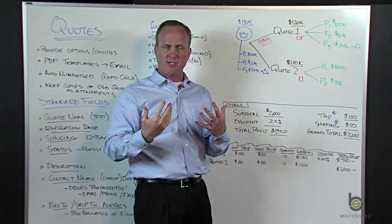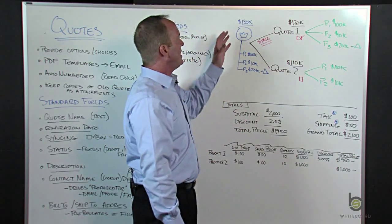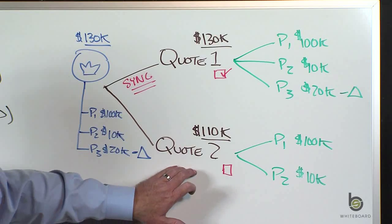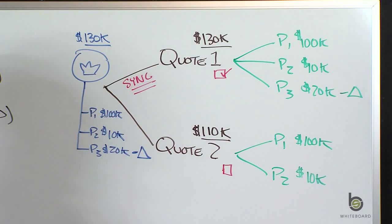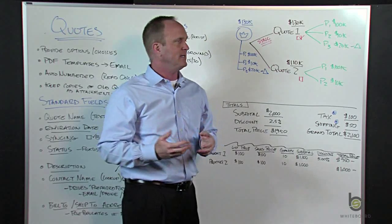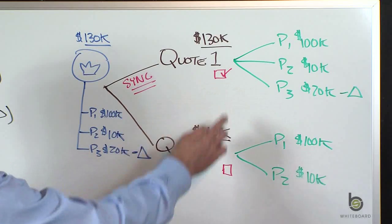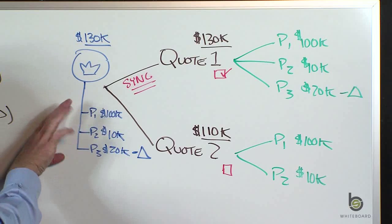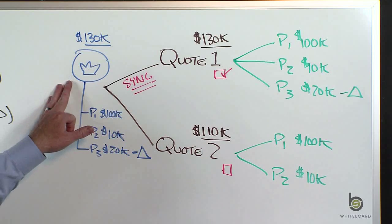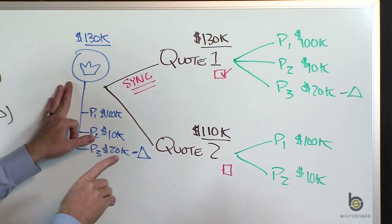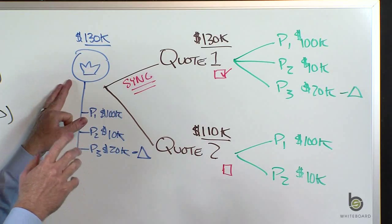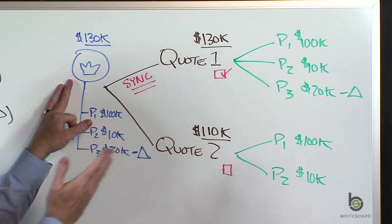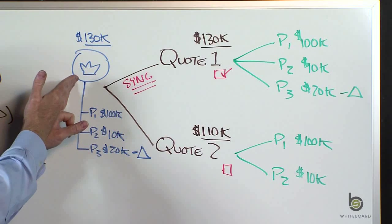Going back to our choices and options that we're giving our client — they might say they're going to buy, but show it to them two different ways. So we've got quote one at $130,000 and quote two at $110,000. At some point you want to sync the quote. Syncing is a checkbox on the quote, and if you check that, the products associated to that quote become the products associated to the opportunity. They're only going to buy one option, so instead of this being a $240,000 opportunity, we've got to tell the database what to reflect on our opportunity for pipeline reporting.